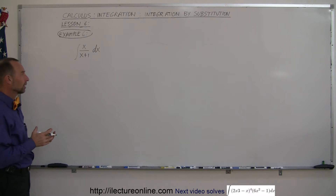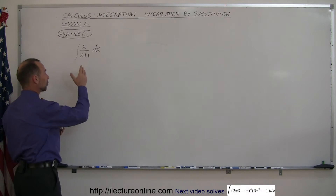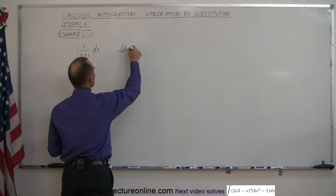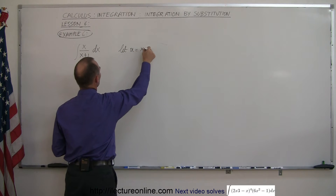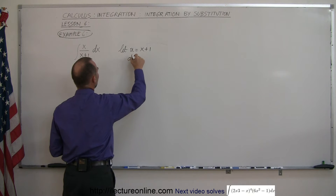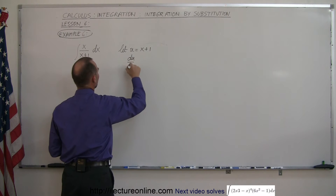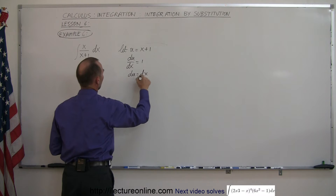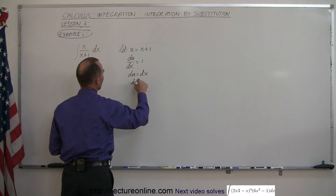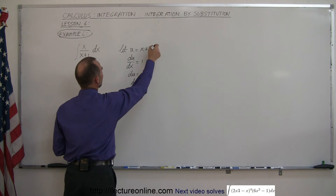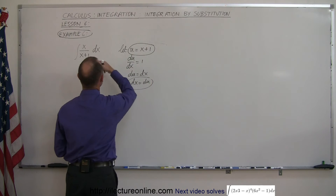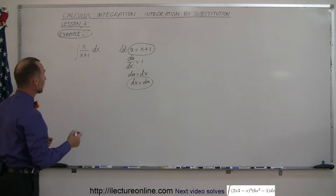We need to substitute something here. I'm going to take a guess and say let u equal x plus 1, which means du/dx is equal to 1, and du is equal to dx. So I'm going to substitute this back inside the integral sign and see what we end up with.